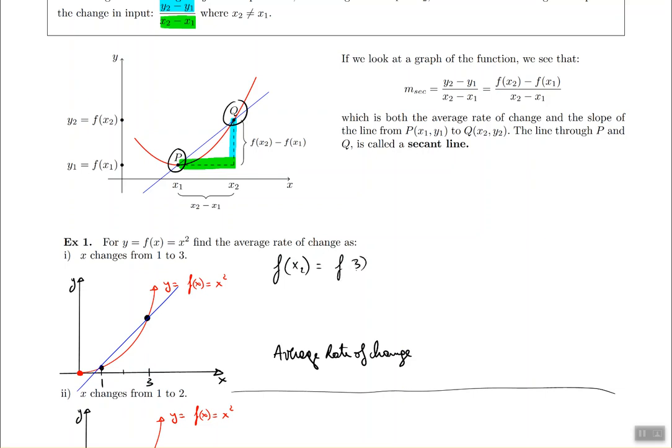So we're going to figure out what f of 3 is. So f of 3 is going to be the function which is x squared where you replace x with the number 3. And the answer turns out to be 9. So in this case 9 represents the y-coordinate of the second point.